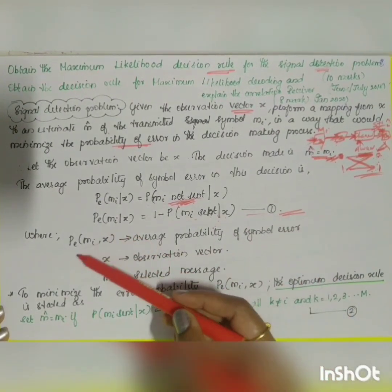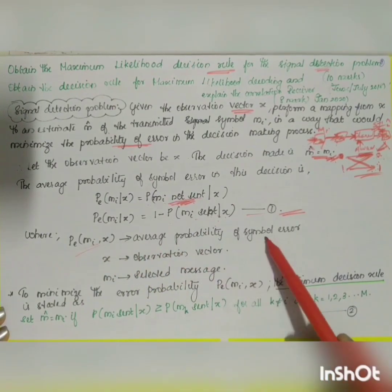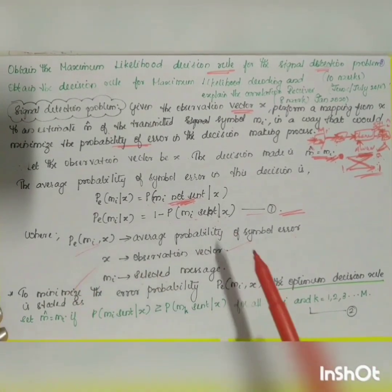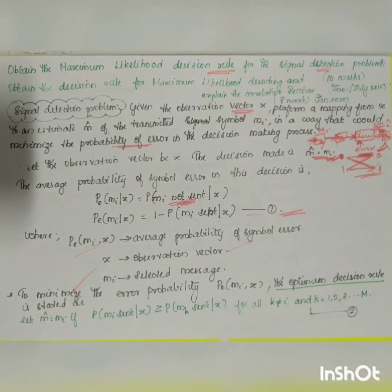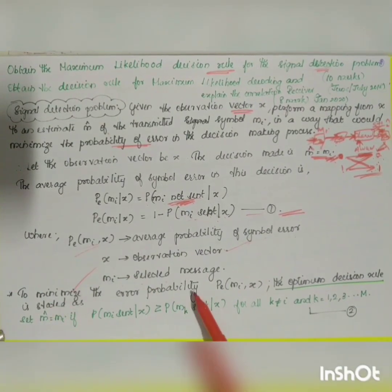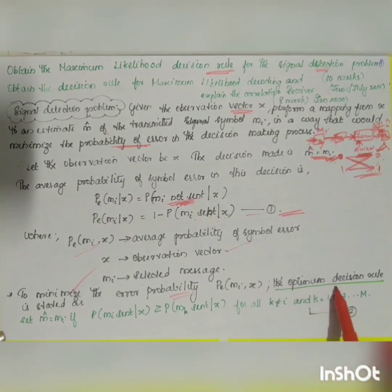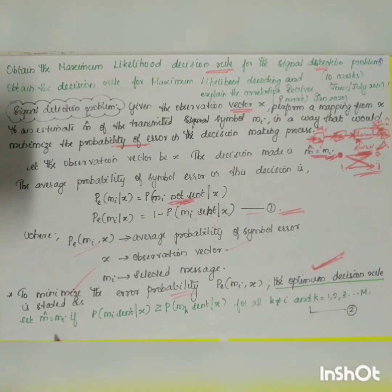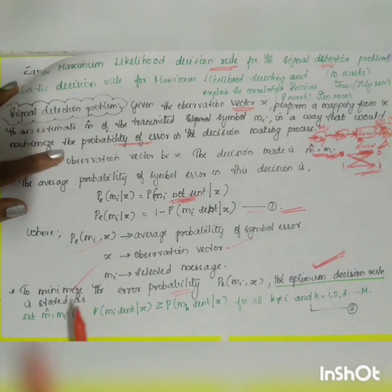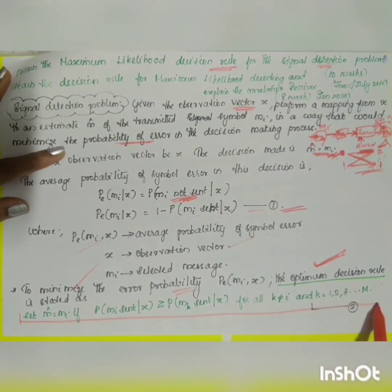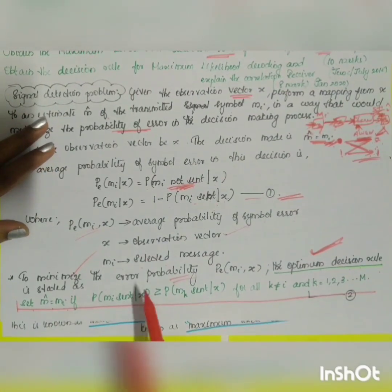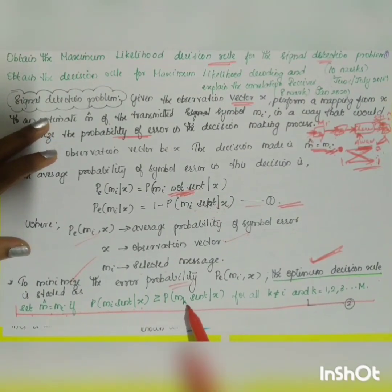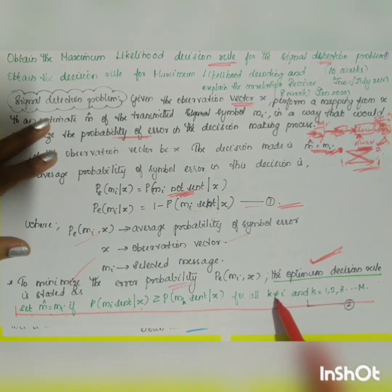The average probability of error x is the observation vector and mi is the selected message. To minimize the error probability, we design the optimum decision rule: set m-hat equal to mi if P(mi sent | x) is greater than or equal to P(mk sent | x) for all values of k not equal to i, where k = 1, 2, 3, ... up to M.